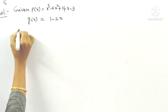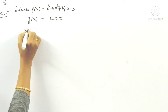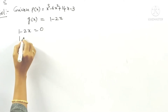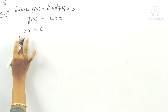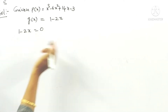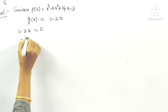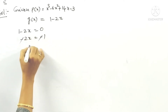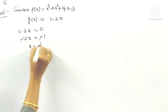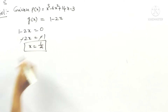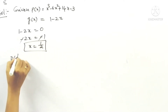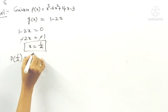First, set g(x) = 1 minus 2x equal to 0. Transposing 1 to the other side, minus and minus get cancelled, so x is equal to 1 by 2. Now we have to find out p of 1 by 2.